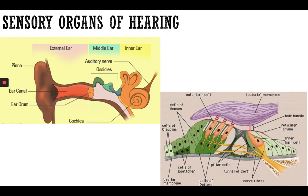After the eardrum, the middle ear begins. Here we have the ossicles — three small bones that vibrate and send the sound to the inner ear. The ossicles serve as a connection between the external and inner ear, acting as the transportation part.